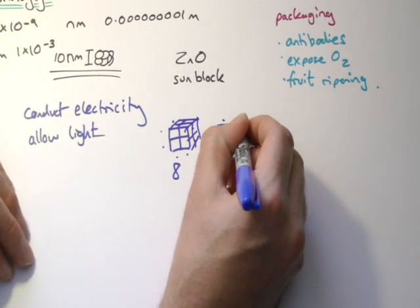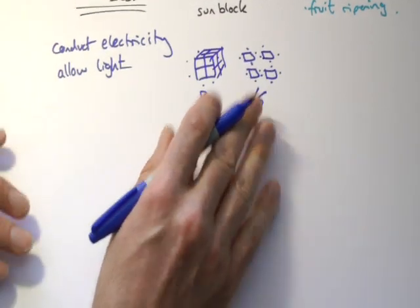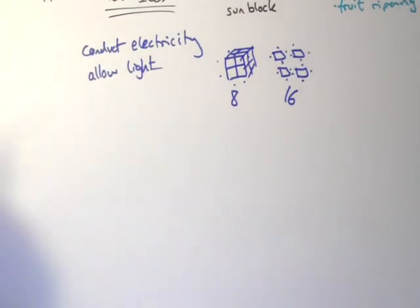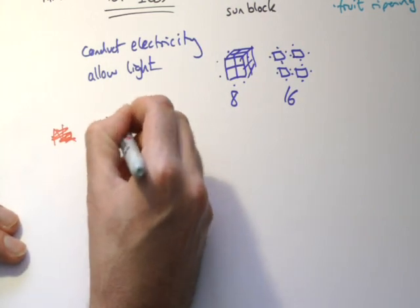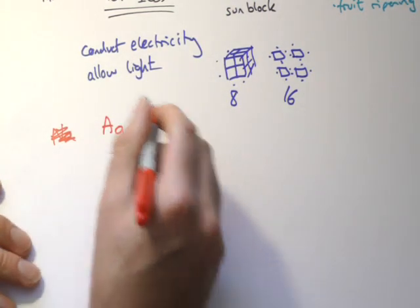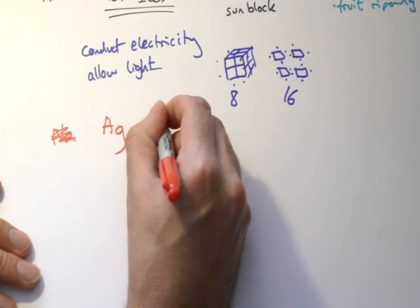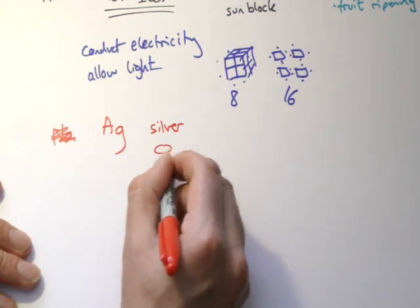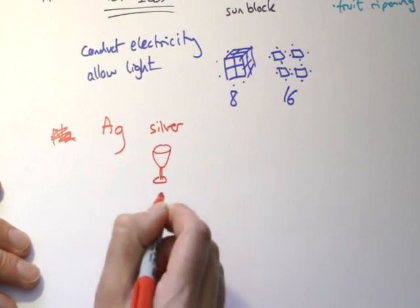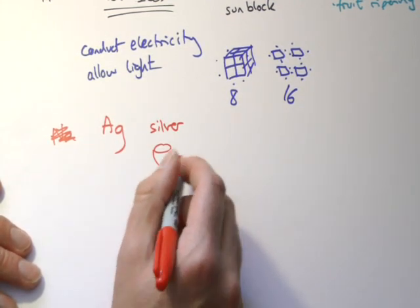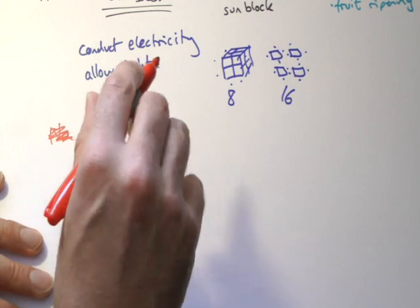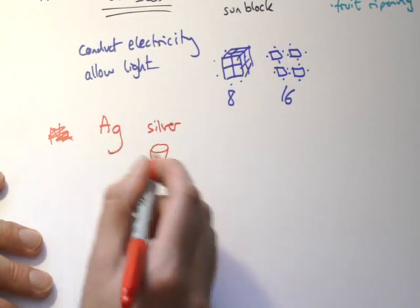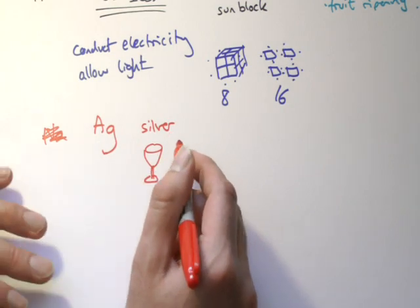And that's why we think nanoparticles may react in different ways. Now the specific example given in the book is to do with silver. Silver, Ag, it's been known for a long time that silver has antibacterial properties. So people, if you could afford it, used to drink out of silver goblets and use silver cutlery and things. They didn't know why at the time, but it turns out that silver can disrupt microorganisms.